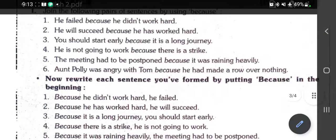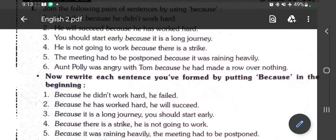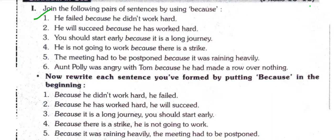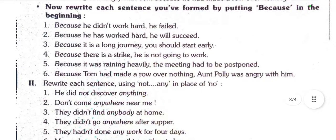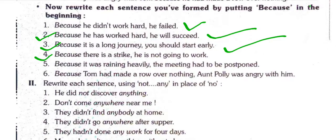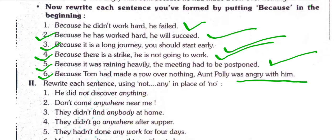Now come to grammar in use. I will give you all questions with answers one by one. Join the following pairs of sentences using 'because': 'Because he did not work hard, he failed.' 'Because he worked hard, he will succeed.' 'Because it is a long journey, you should start early.' 'Because there is a strike, he is not going to work.' 'Because it was raining heavily, the meeting had to be postponed.' 'Because Tom had made a row over nothing, Aunt Polly was angry with him.'